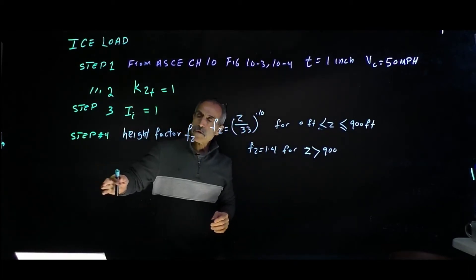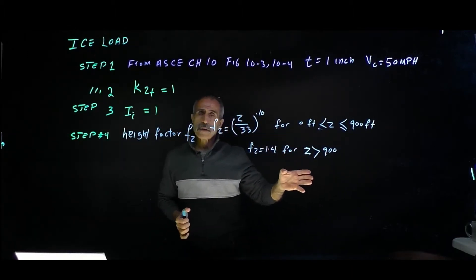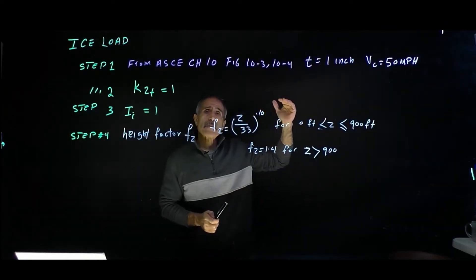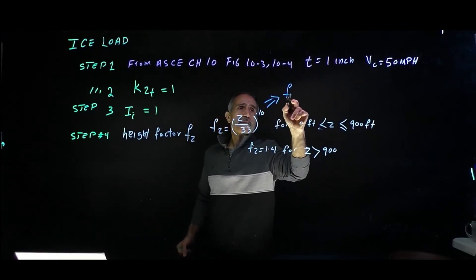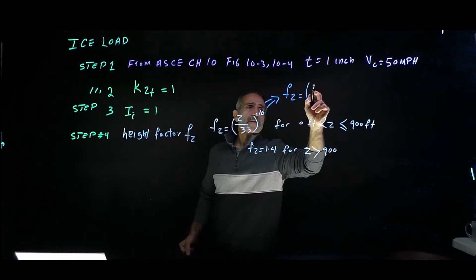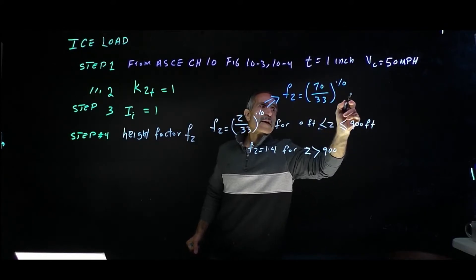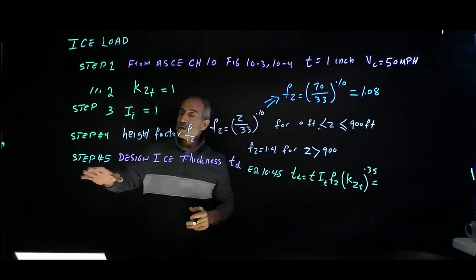Step four: find the height factor fz. The formula from ASCE Chapter 10 is fz = (z/33)^0.1, applicable for structures less than 900 feet tall. For structures over 900 feet, fz = 1.4. Our structure is at the top of a 70-foot building, so fz = (70/33)^0.1, which comes out to 1.08.